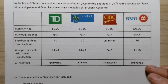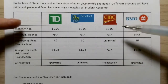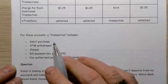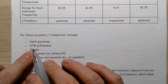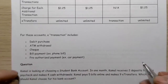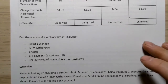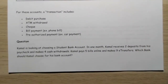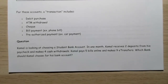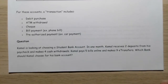Looking at these accounts, they're almost all the same — CIBC is a little bit different. When we talk about a transaction, we're talking about a debit purchase, going to an ATM, writing a check, bill payment, or pre-authorized payments. Now, Kamal is looking at choosing a student bank account. In one month, Kamal receives two deposits from his paycheck, makes four cash withdrawals, pays five bills online, and makes nine e-transfers. So which bank should he choose?